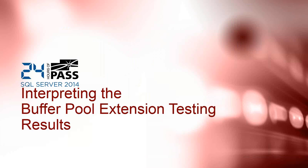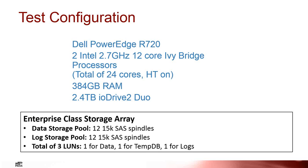Now let's look at some of these results. Our test configuration was a Dell PowerEdge 720 — a two-socket box with two 12-core Ivy Bridge processors, giving us 24 cores total. With hyperthreading on, we had 48 schedulers. We had 384 gigs of RAM and a 2.4 terabyte IO Drive 2 Duo SSD. We also had an enterprise-class storage array with a typical setup — spindles and typical configuration similar to what you'd see in the field.